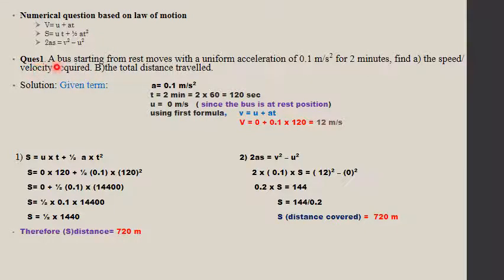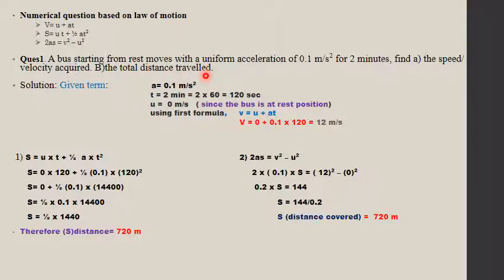Question 1: A bus starting from rest moves with a uniform acceleration of 0.1 m/s² for 2 minutes. Find the speed acquired and the total distance travelled. Given: acceleration a = 0.1 m/s², time t = 2 minutes = 120 seconds, and initial velocity u = 0 because the bus starts from rest. SI unit of time is seconds, so we convert 2 minutes to 120 seconds.